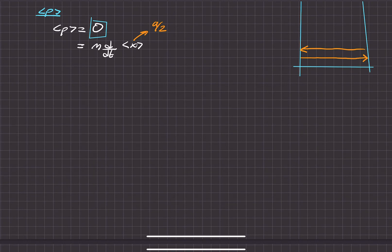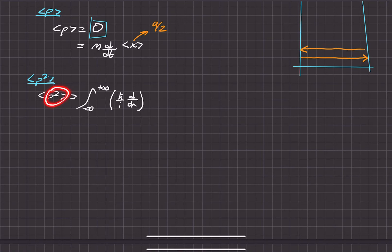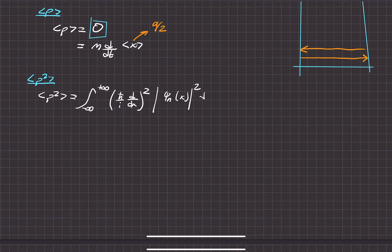The next quantity is the expectation value of momentum squared. This one doesn't have a great qualitative shortcut, but doing the integral provides good insight. The quantum momentum operator is h-bar times the spatial derivative d/dx — and since it's momentum squared, we square that operator and apply it to the wave function psi sub n, integrating over all space.